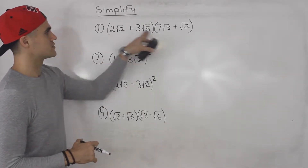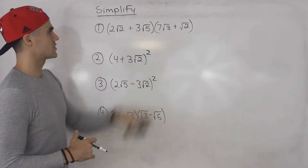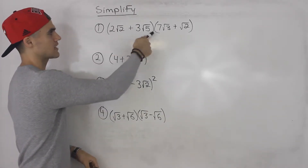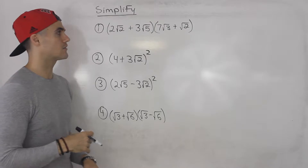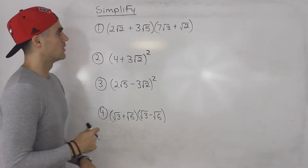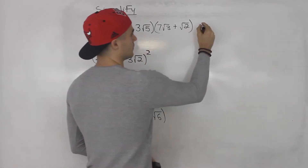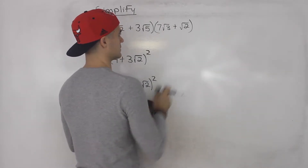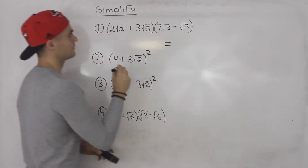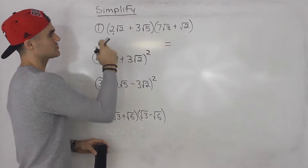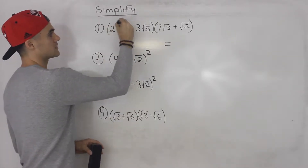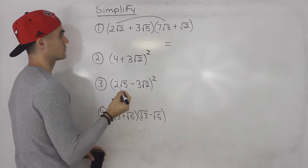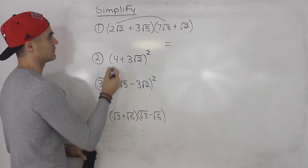We've got two brackets that we're multiplying by each other. In number one, we have 2√2 + 3√5 in one bracket times 7√3 + √2 in the other. When you get something like this, what you're doing is basically foiling out. So you take 2√2 and multiply it by 7√3.